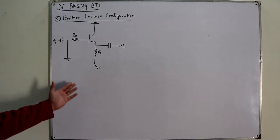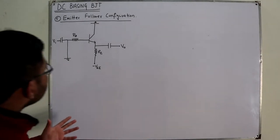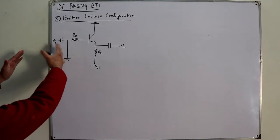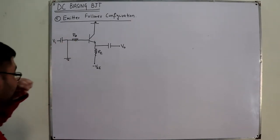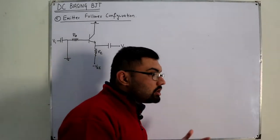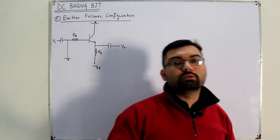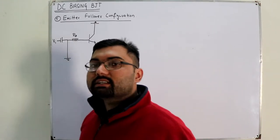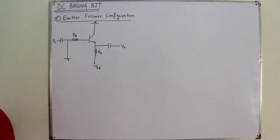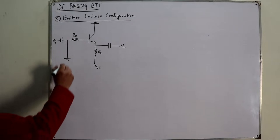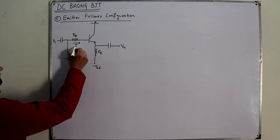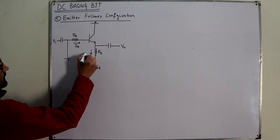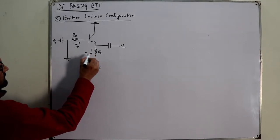We are doing the DC analysis of the network, so the capacitors would be open-circuited. Why? Because we do not have an AC signal here; we are only studying the DC signal. In DC, the capacitor acts as an open circuit equivalent. So IB is the entering current, and similarly you have IE.